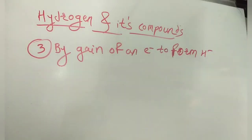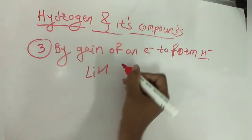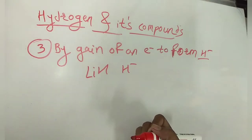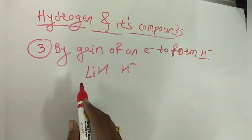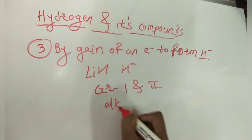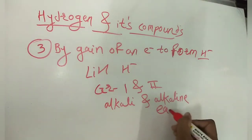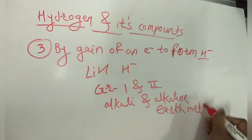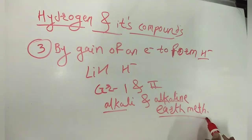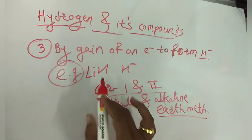The third way hydrogen attains stability is by gaining an electron to form the hydride ion (H⁻). Crystalline solids such as lithium hydride generally contain the hydride ion. Hydride ion formation is common in highly electropositive metals — specifically the alkali and alkaline earth metals of Group 1 and Group 2, on the left-hand side of the periodic table.